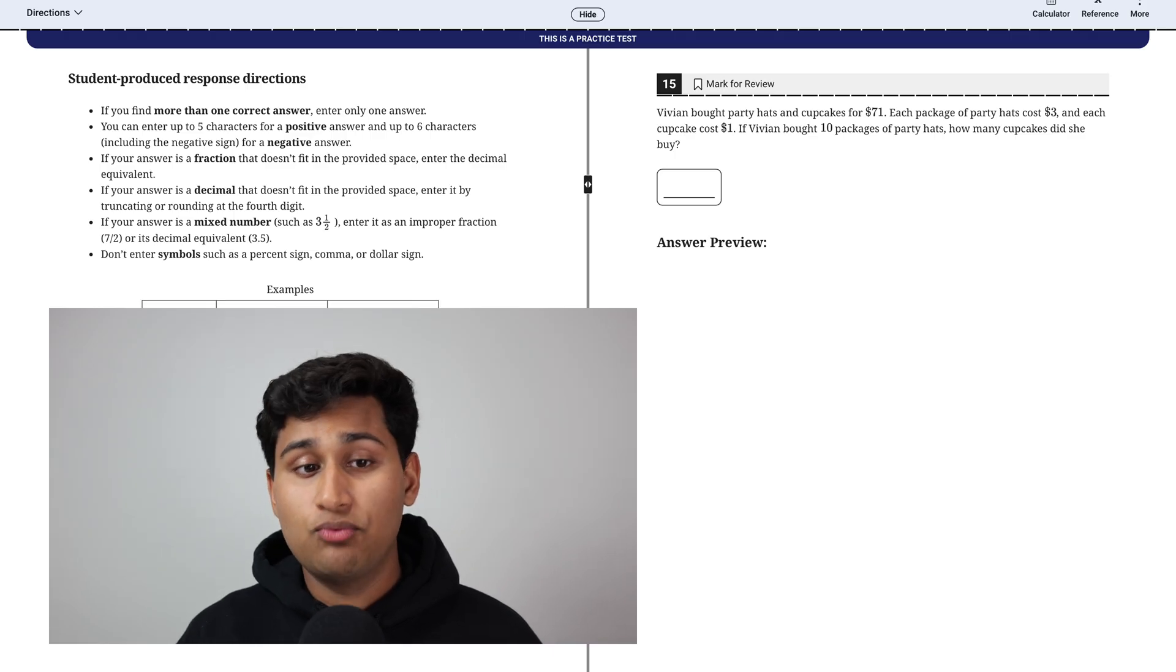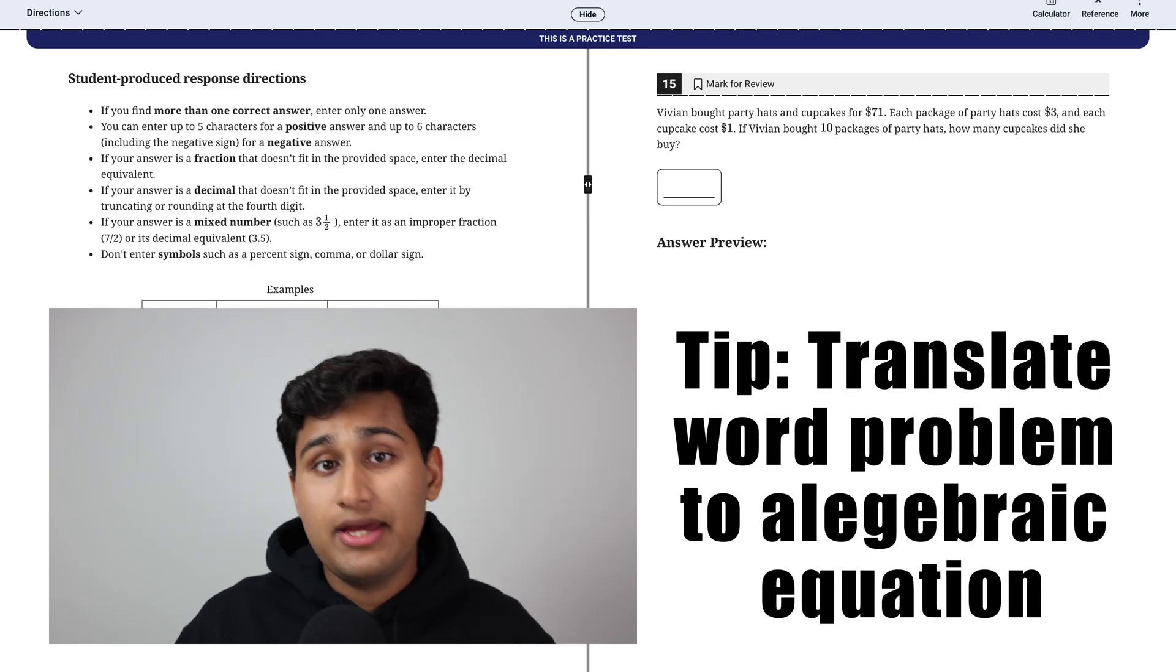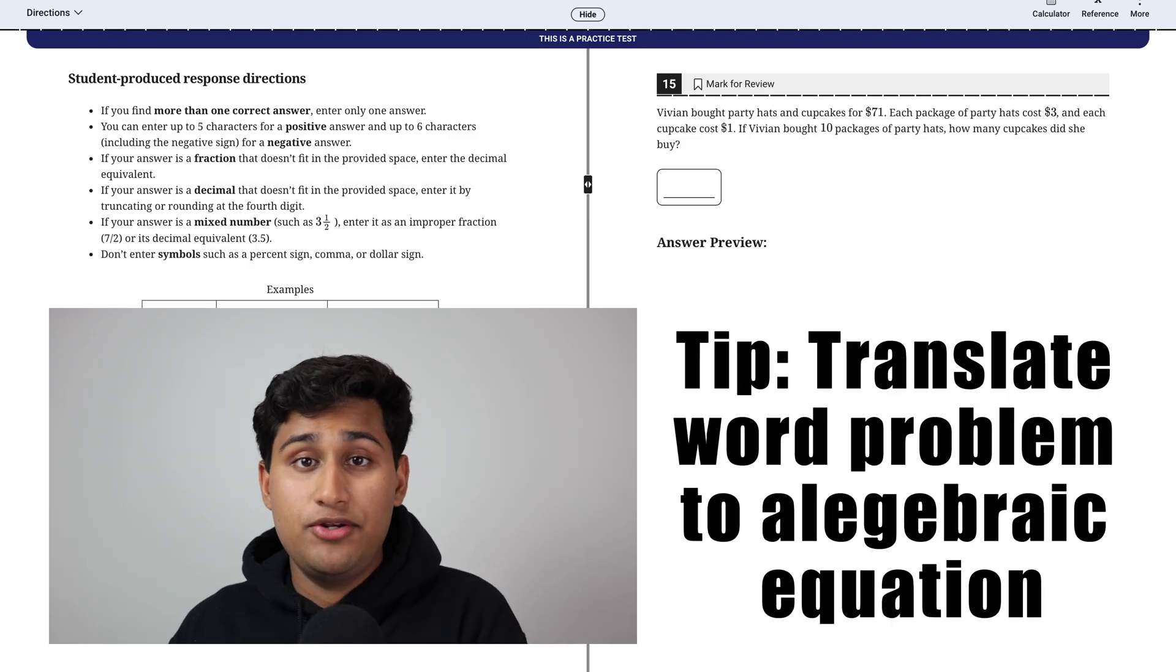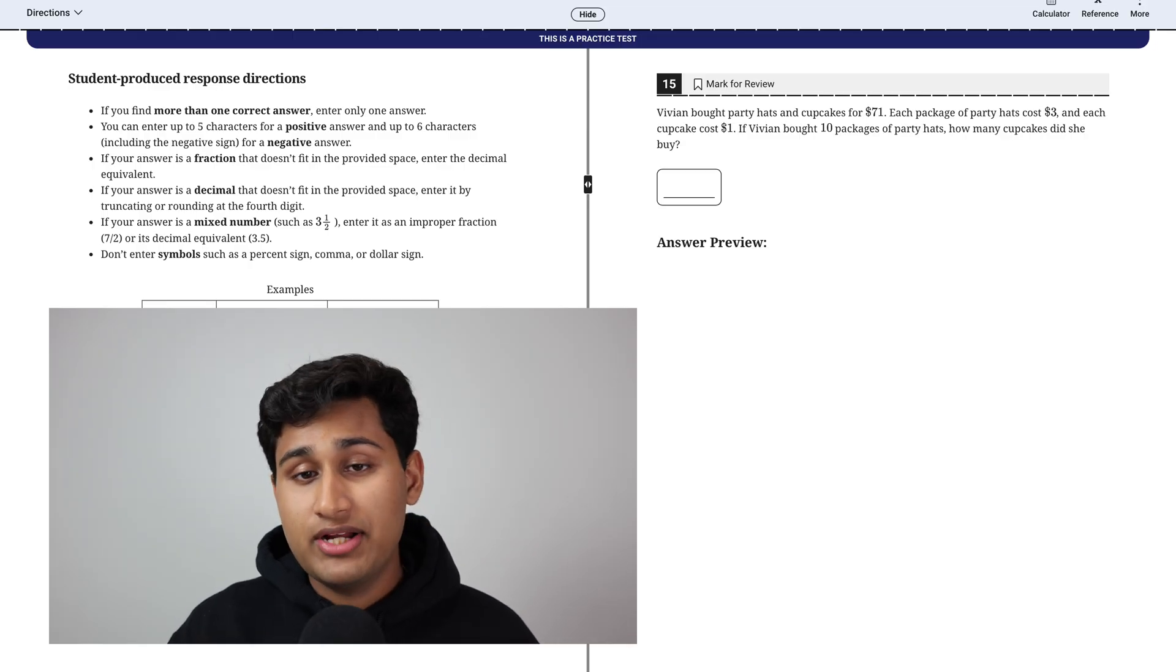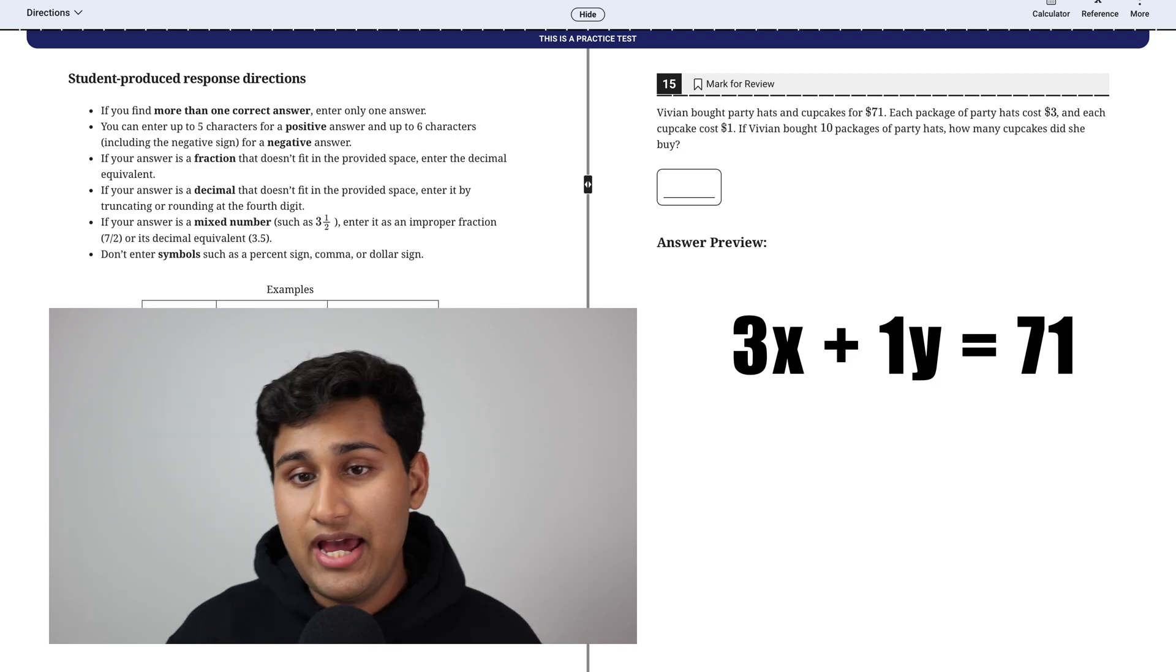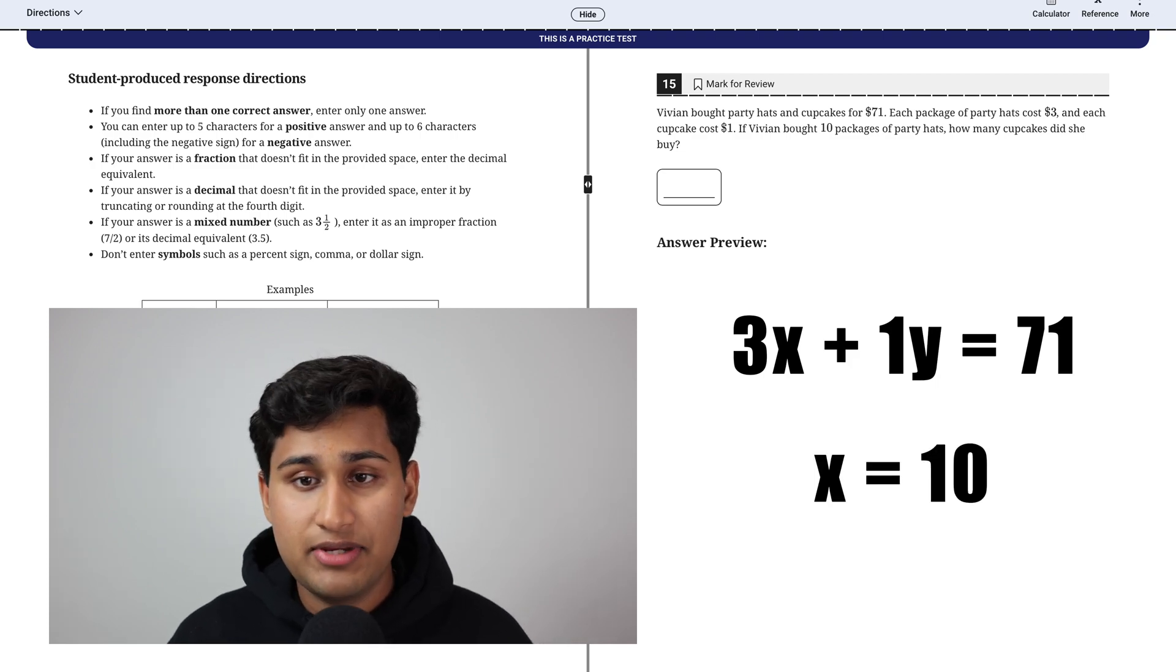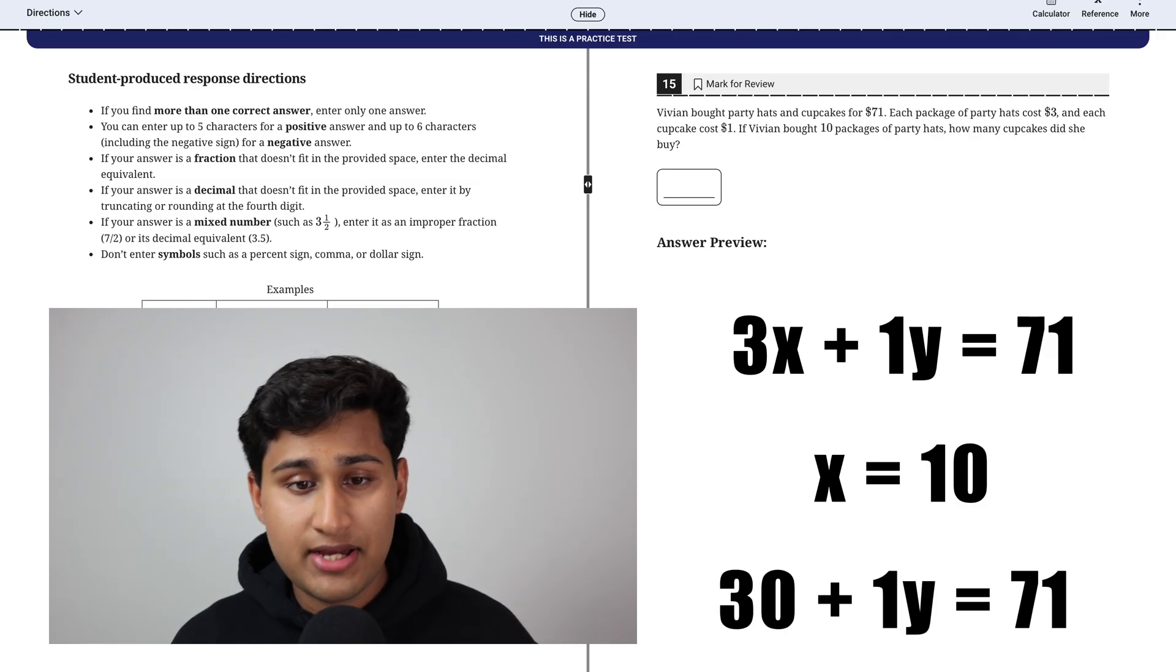So the next type of problem is word problems with equations. And my tip for this one is you want to translate the word problem into an algebraic equation and do it carefully because it's really easy to mess up. So in this question, we want to set this up as three X plus one Y equals 71. And we're told that X equals 10 because X represents party hats and Y represents cupcakes.